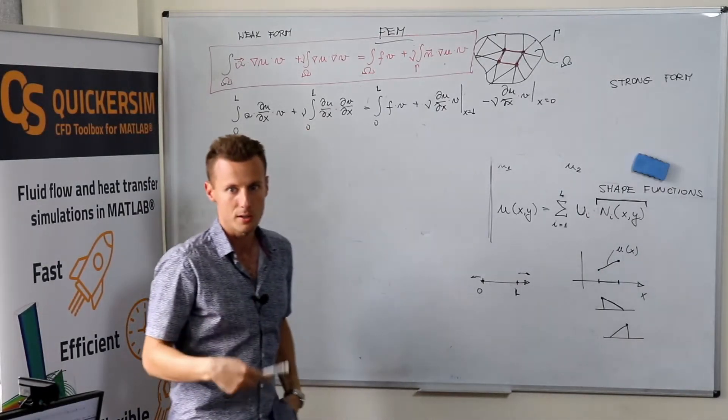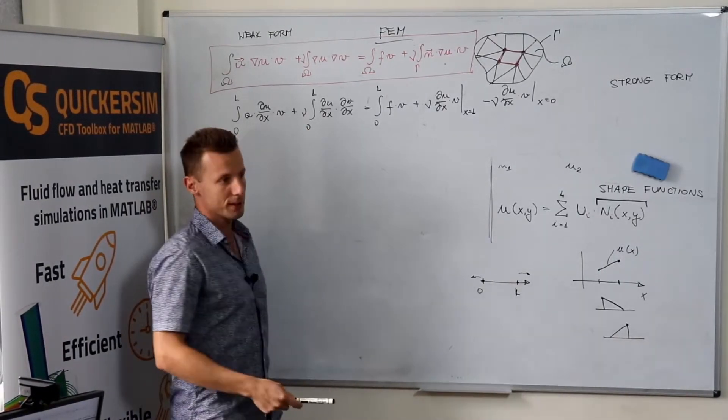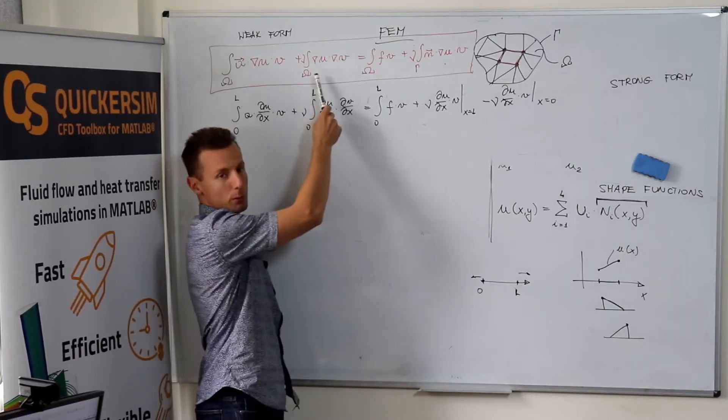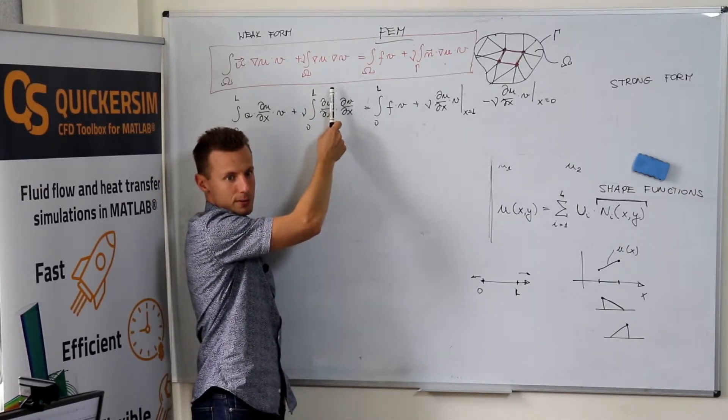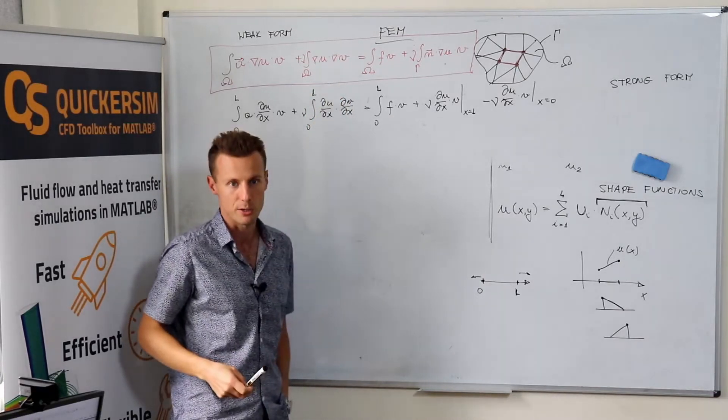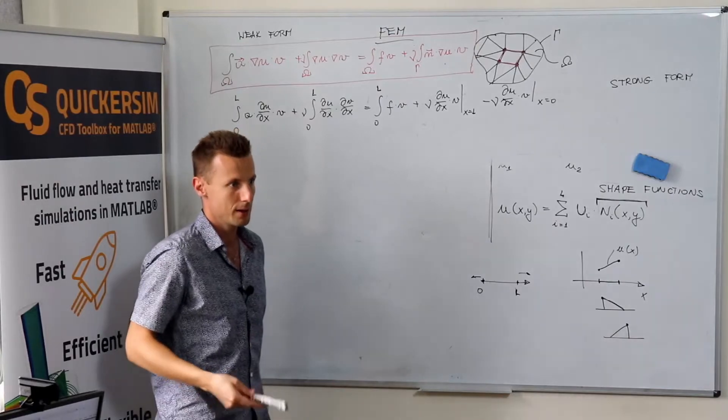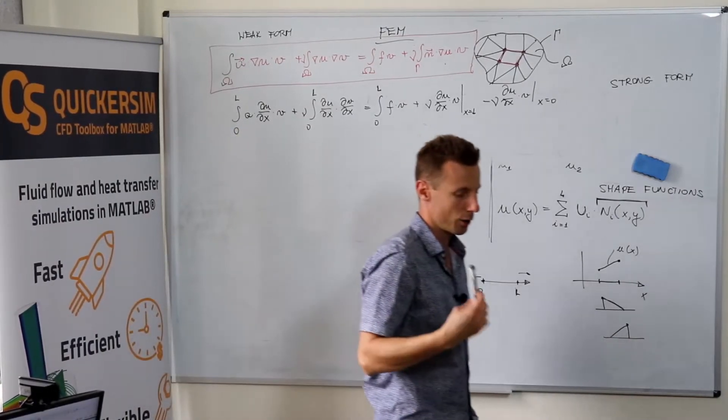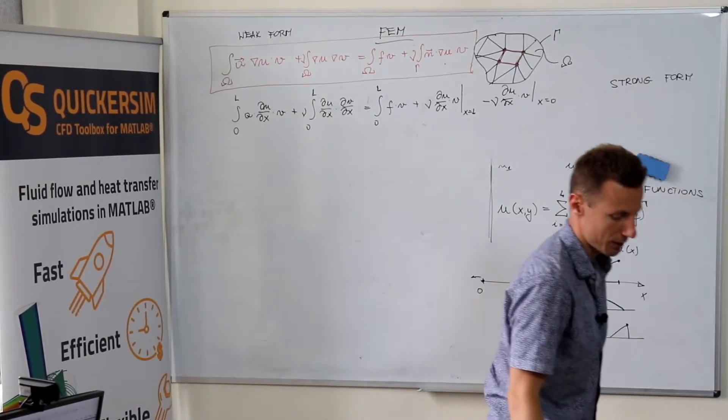Why is it called weak? First of all, it's called weak because it doesn't require calculating second order derivatives. It only requires calculating the first order derivatives. It's one of the arguments why it's called weak formulation.